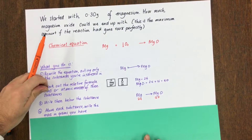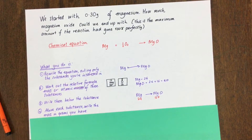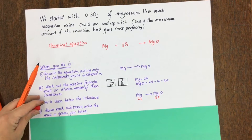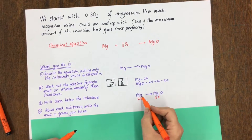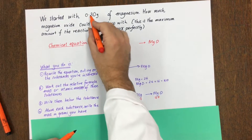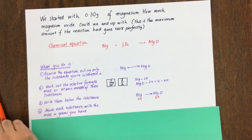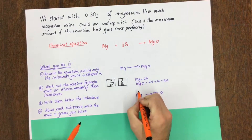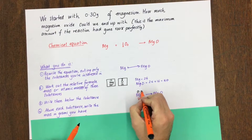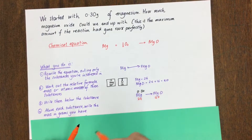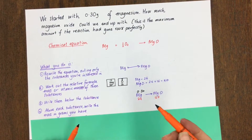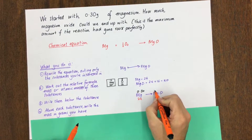Step four: above each substance, write the mass in grams that you have. So we know that we started with 0.3 grams of magnesium. And we don't know how much magnesium oxide we're going to end up with, because that's what we're working out, so we'll call that x.